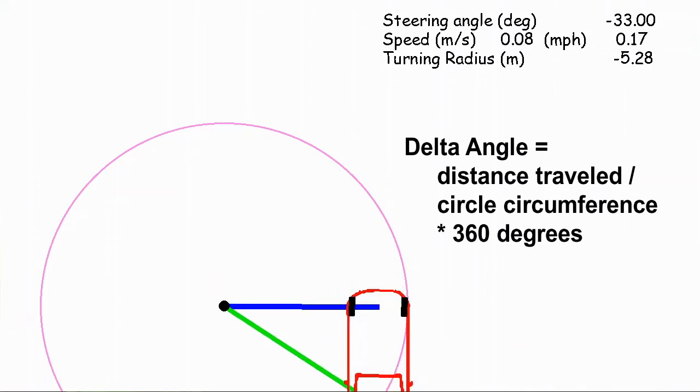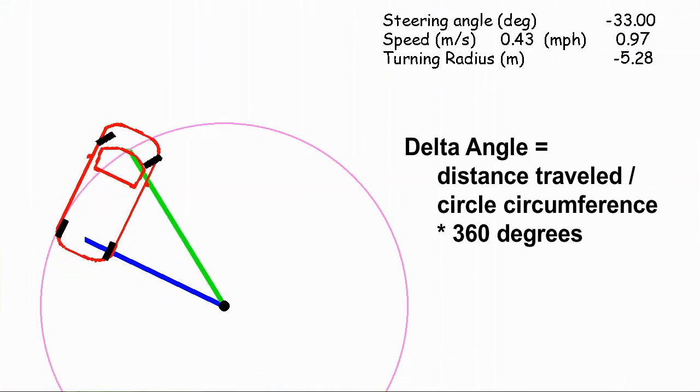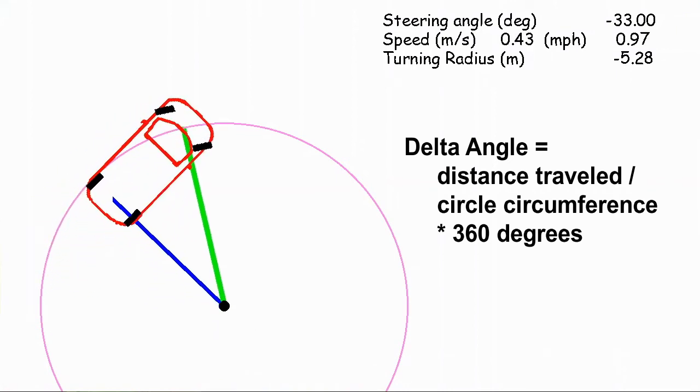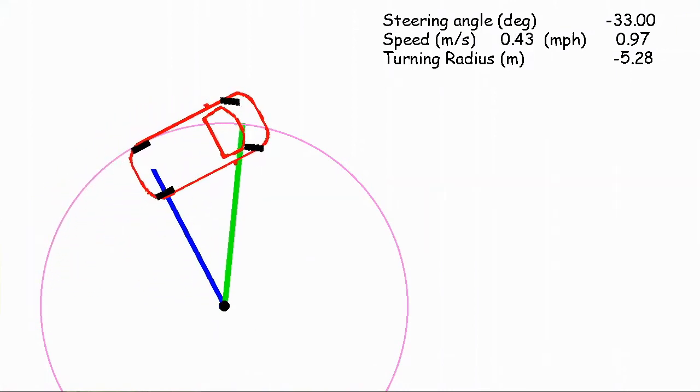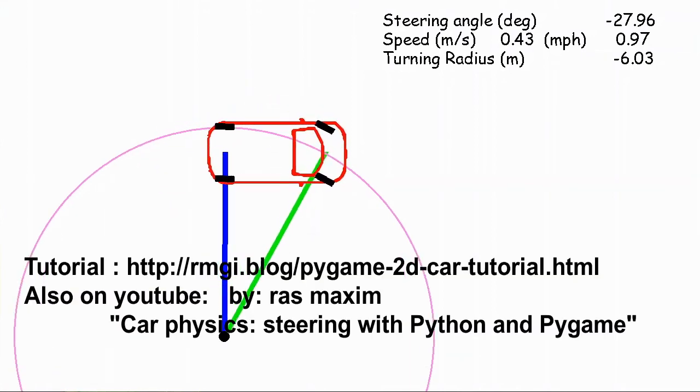If that distance took it 90 degrees around the circle, then we would update that angle to be 90 degrees different. And pygame, which is what I'm using to program this, will rotate it an additional 90 degrees.